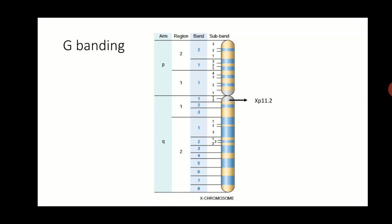But before doing that, let us first review the structure of a chromosome. The chromosome has a short arm termed as the P arm and a long arm termed as the Q arm. P is derived from the word 'petite' meaning small, and Q is just the next letter to P. Both the short and long arms have different regions termed as 1 and 2, and each of these regions are divided into certain bands labeled 1, 2, 3, and 4.